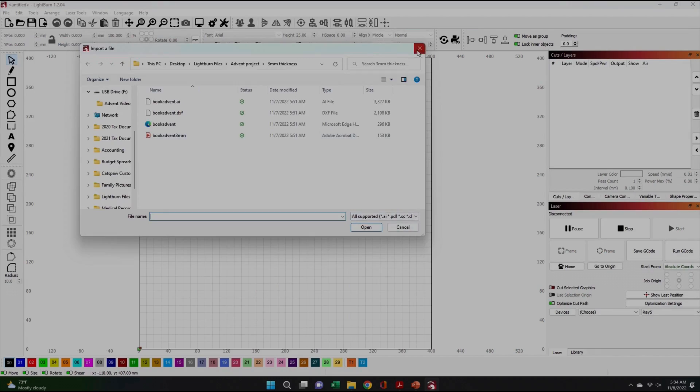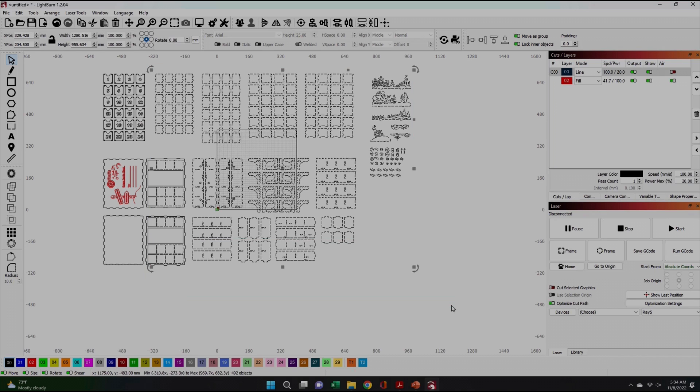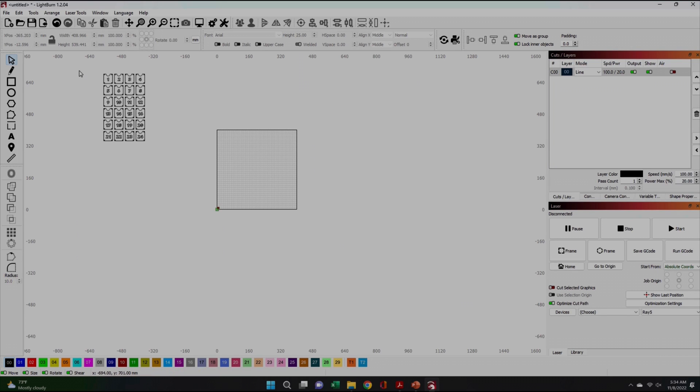Next, I opened up Lightburn and imported the PDF. This laid the entire project cut lines over my grid area. I isolated each section one by one and ended up creating 15 different files for all my different cuts.